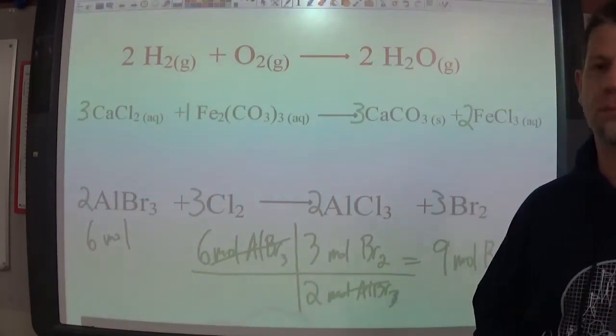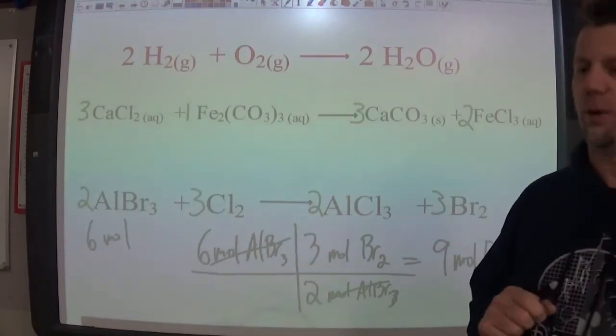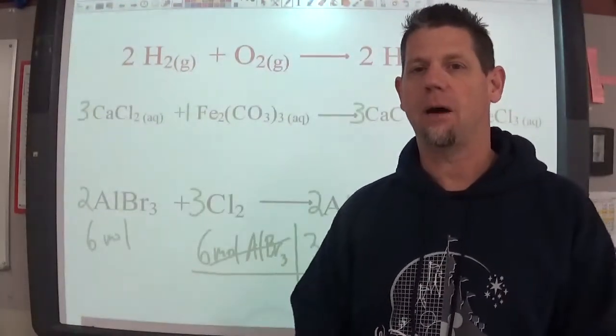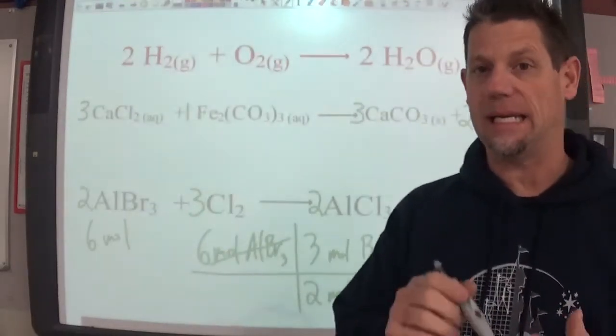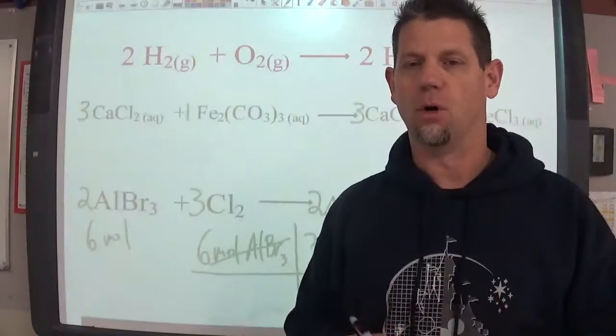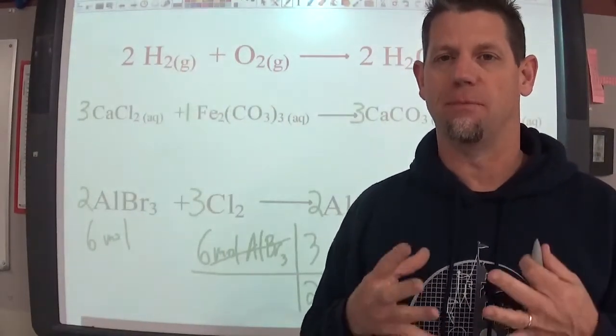The mole to mole ratio is the important part here. You've got to be able to look at a balanced chemical equation and understand if I'm starting with some number of moles of this, how many moles of the other things will I need if it's a reactant or will I make if it's a product? The mole to mole ratio tells you how much you're going to be using in terms of moles.